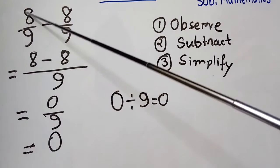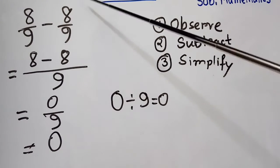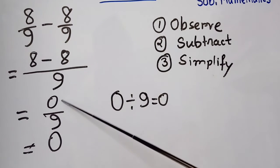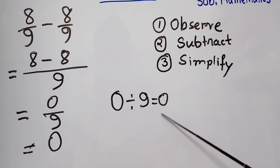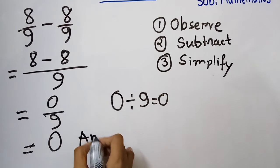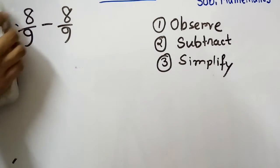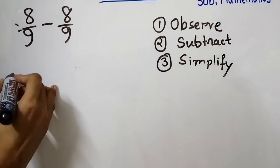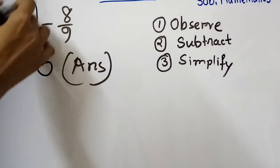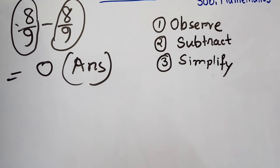We subtract only the numerators: 8 minus 8 equals zero. Zero divided by nine equals zero, so the final answer is zero. You can also see this quickly because both fractions are the same, and subtracting the same numbers always gives zero.